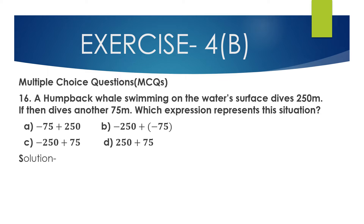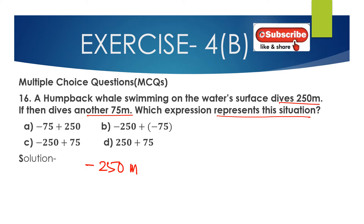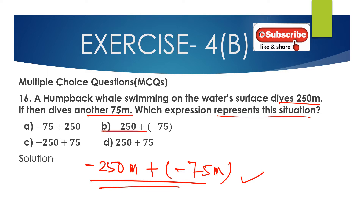Question 16, MCQ: A humpback whale swimming on the water surface dives 250 meters, then dives another 75 meters. Which expression represents this situation? Since diving means going inside the water, it is negative. So it is minus 250 meters plus minus 75 meters. Option B is the correct answer.